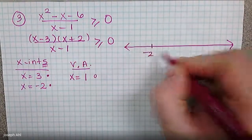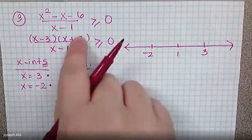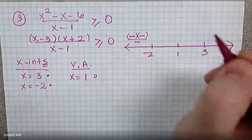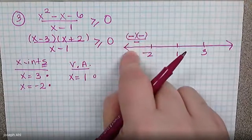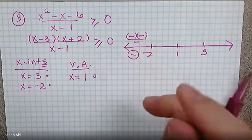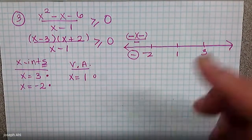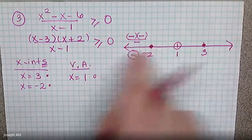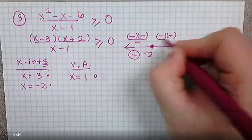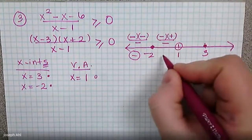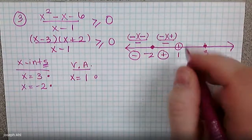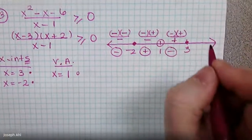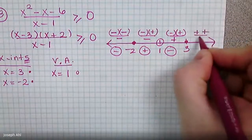On the number line we have negative two, one, and three. When testing, plug into all three factors. Test negative three: negative three minus three is negative, negative three plus two is negative — product is positive; over negative three minus one which is negative — positive over negative is negative. Test zero between negative two and one: zero minus three is negative, zero plus two is positive, zero minus one is negative — negative times positive is negative over negative, giving positive.